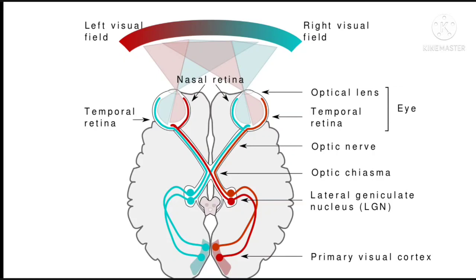This allows all the information entering the eye from the right visual field to go to the left side of the brain and vice versa. So like the rest of the body, all the information coming from the right visual field actually goes to the left side of the brain, and all the information coming from the left visual field goes to the right side of the brain.